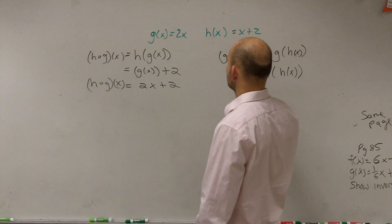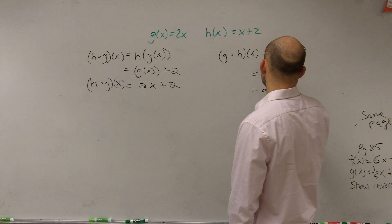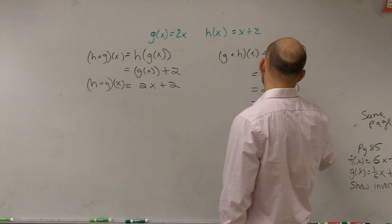So therefore, what does h of x represent? h of x is x plus 2. So I have 2 times x plus 2. Simplify. I get 2x plus 4.